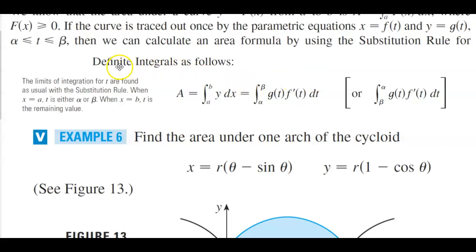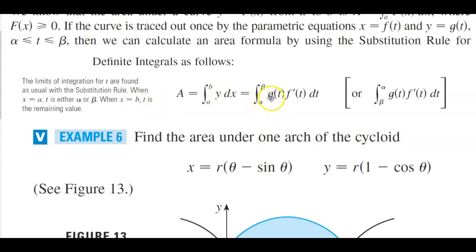For definite integrals, if we have a function in terms of y dx going from a to b, we use x = a when t is either alpha or beta, and when x = b, t is the remaining value. So going from alpha to beta, we have g(t) times f prime of t dt, or we go from beta to alpha with the same functions.